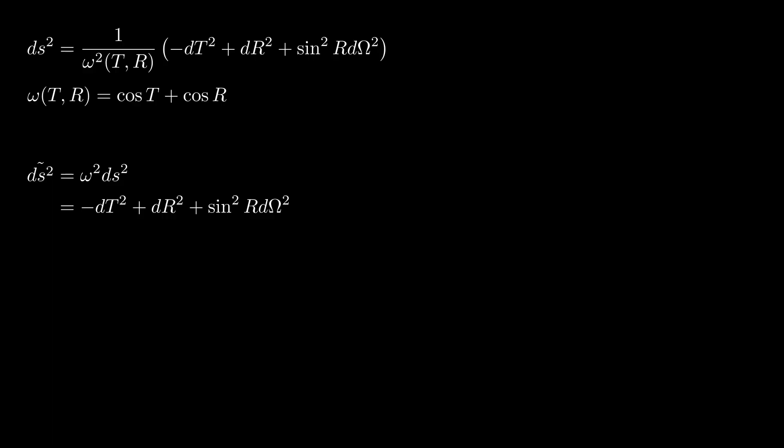To see this, you can compute the Riemann tensor, which we will cover in another video, of the original metric and find all 20 independent components are zero, and then compute it for our tilde metric and find non-zero components.